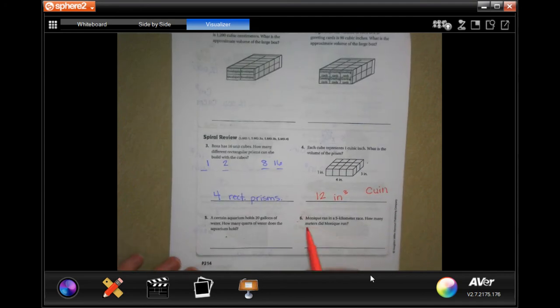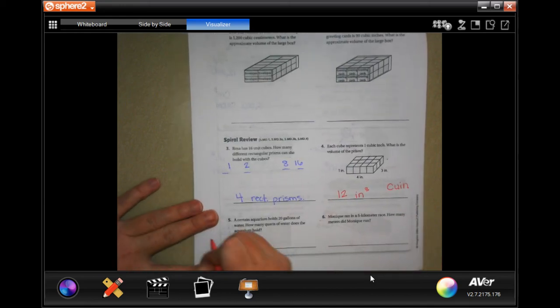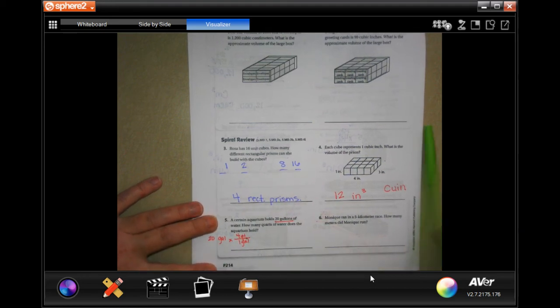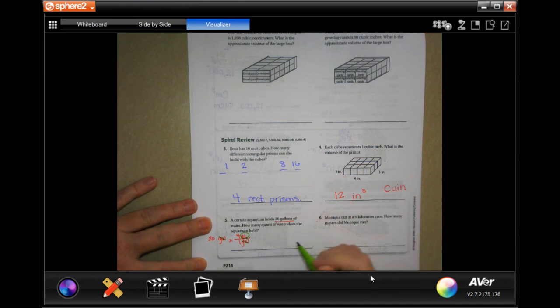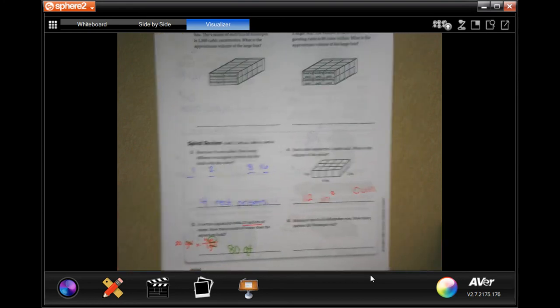A certain aquarium holds 20 gallons of water. How many quarts of water does the aquarium hold? So I'm going to start with our 20 gallons. And in 1 gallon, there are 4 quarts. Cross-cancel gallon, so we're in quarts. That's what we want. And then 4 times 20. Well, 20, 40, 60, 80. 80 quarts.